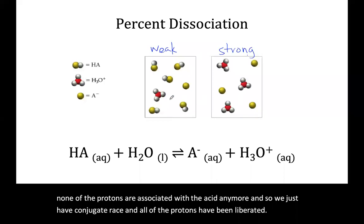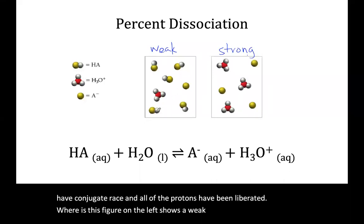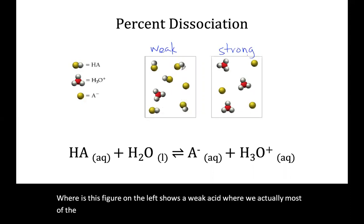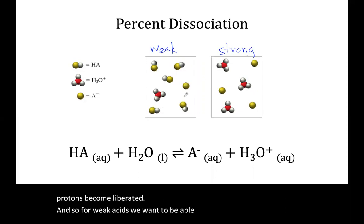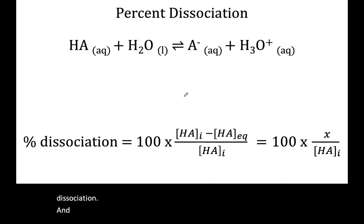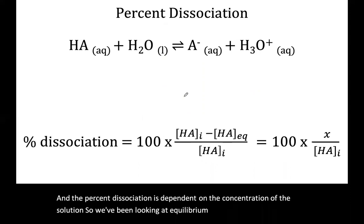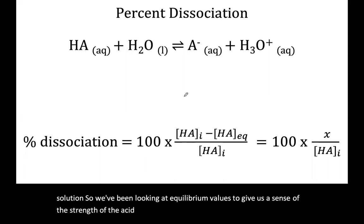Whereas this figure on the left shows a weak acid, where we actually see most of the protons are still associated with the acid, and only some of the protons become liberated. And so for weak acids, we want to be able to calculate their percent dissociation. The percent dissociation is dependent on the concentration of the solution. We've been looking at equilibrium values to give us a sense of the strength of the acid, but we need to know the concentration to know the percent dissociation.